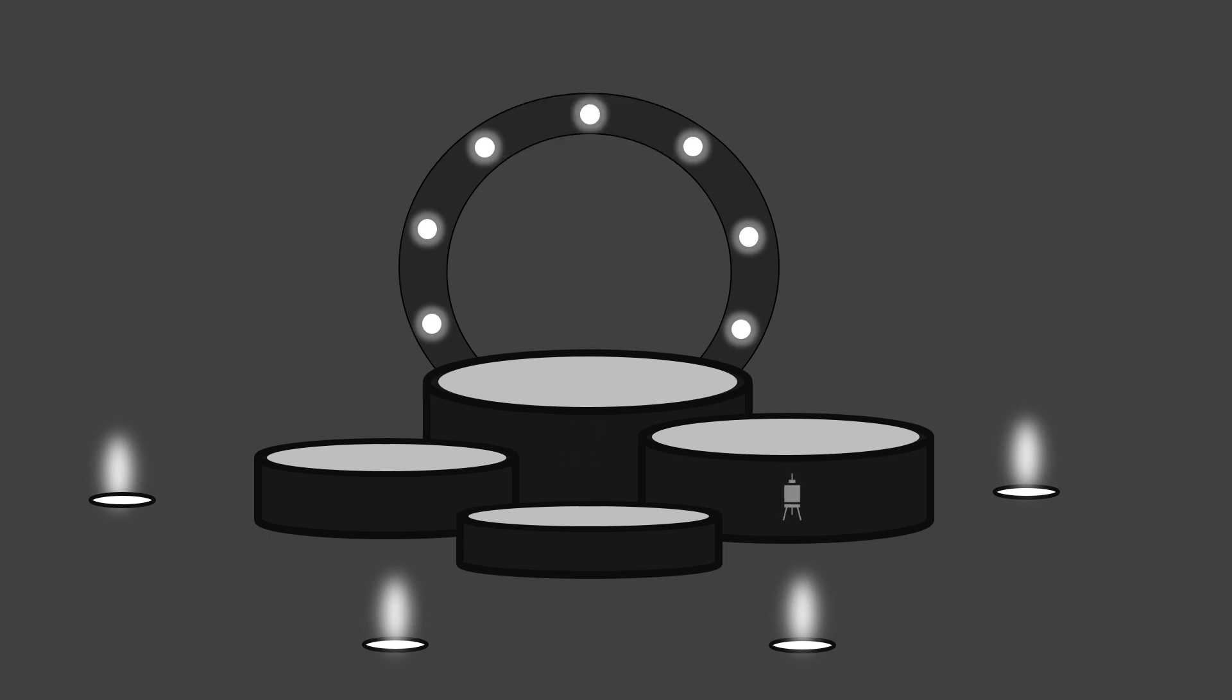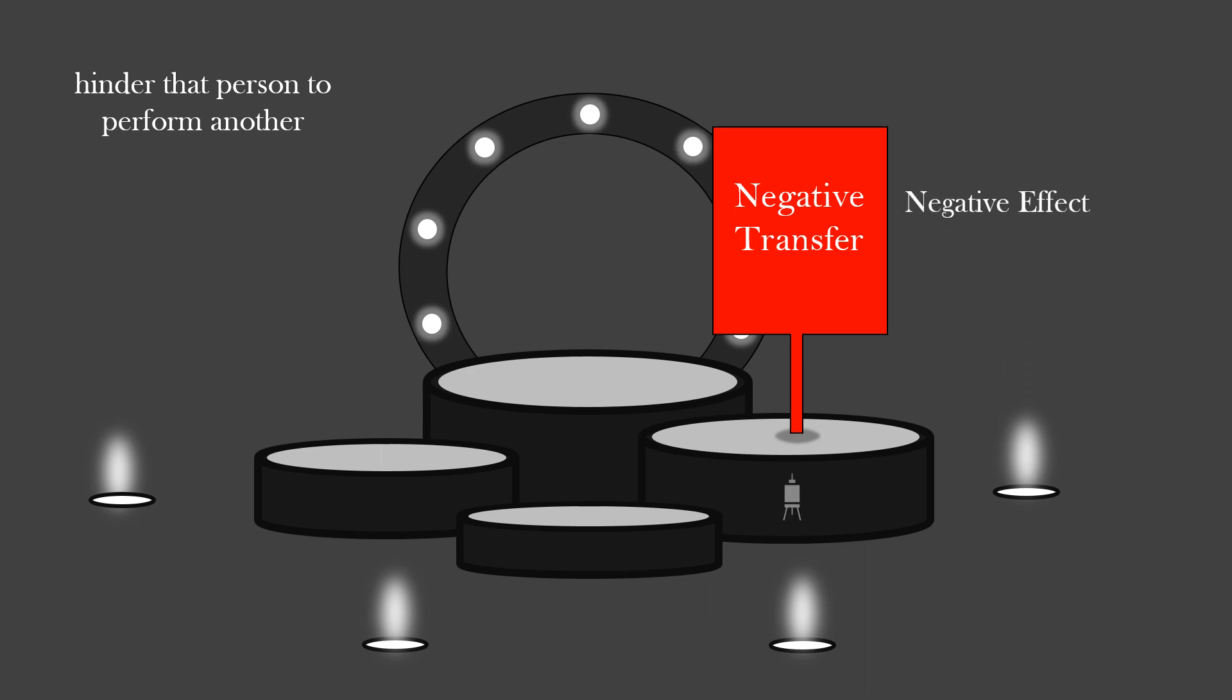Second is negative transfer. This is the exact opposite of positive transfer. This means that learning something from another context may hinder that person to perform another. This creates a negative effect in doing another task.